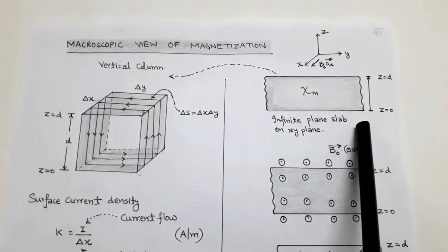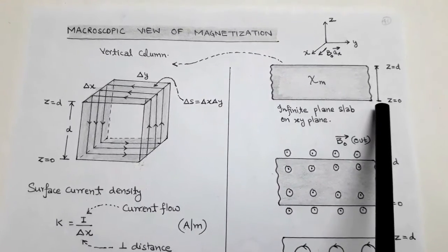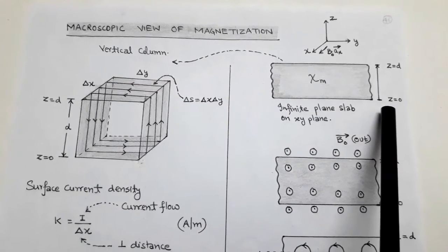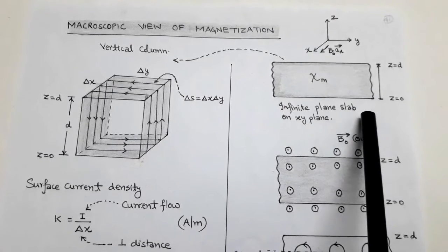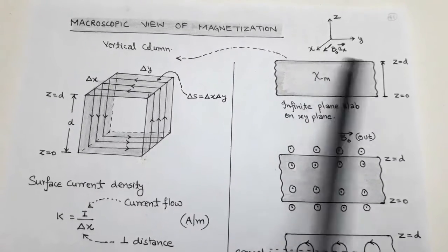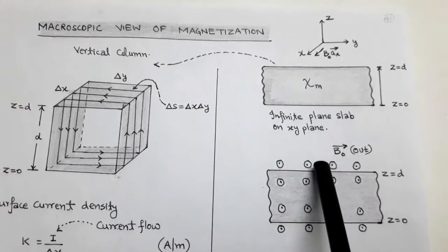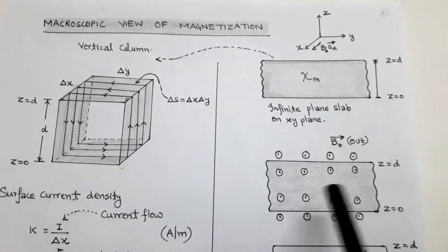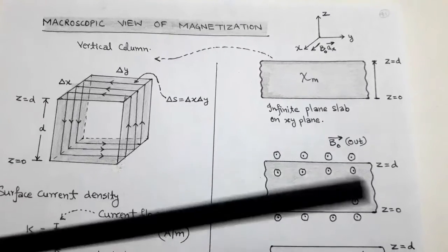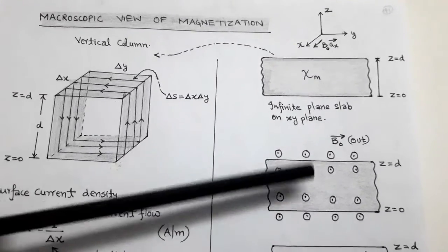This infinite slab has a width d, meaning the x and y coordinates tend towards infinity, but the width goes from z equals 0 to z equals d. We consider that the external magnetic field is towards the positive direction of the x-axis, which we call B0 unit vector x. As we see from the figure, the x-axis is pointed out of the page, so the direction of the external magnetic field is out of the page, noted by a dot. This infinite plane slab is placed in the direction of the external magnetic field.